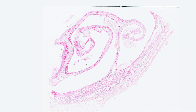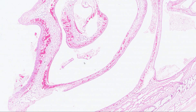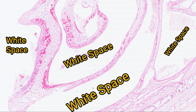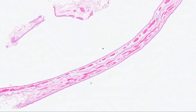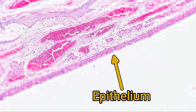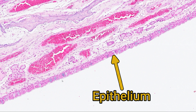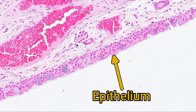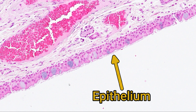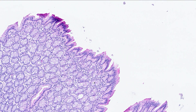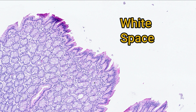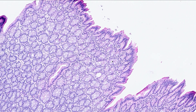So how do you find epithelium? My first tip is to look for the white space. White space means that there's a lumen or some other passage to the exterior world. The exception to this is blood and lymphatic vessels, but they tend to be easy to spot because blood vessels have red blood cells in them. Take a look at this section of large intestine — there's a huge white space in the middle, which is the lumen. That's lined by epithelium.